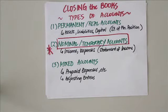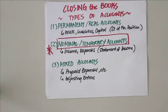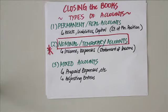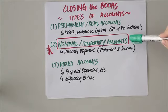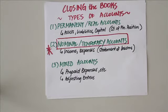Nominal accounts are temporary — their balances are not carried forward to the next period. These include balances found on the income statement, namely your income and expenses. Mixed accounts have the nature of both real and nominal accounts, including prepaid expenses and unearned liabilities. Adjusting entries are prepared for these to separate the nominal and real portions. Closing the books focuses on the nominal accounts since their balances are not carried forward.